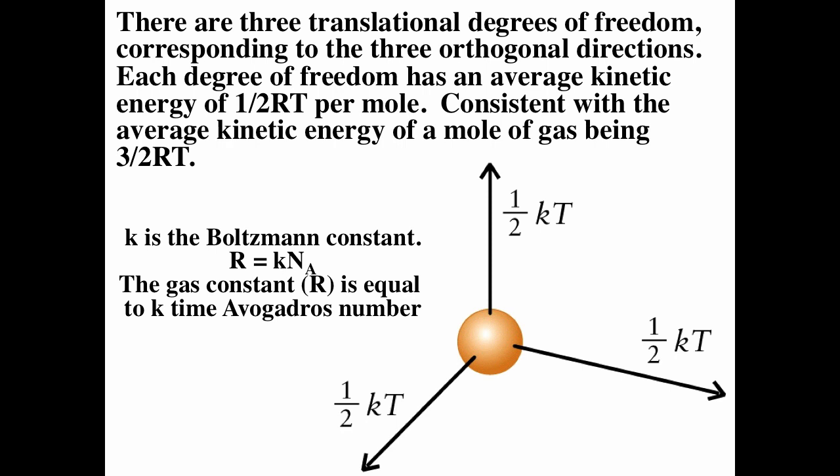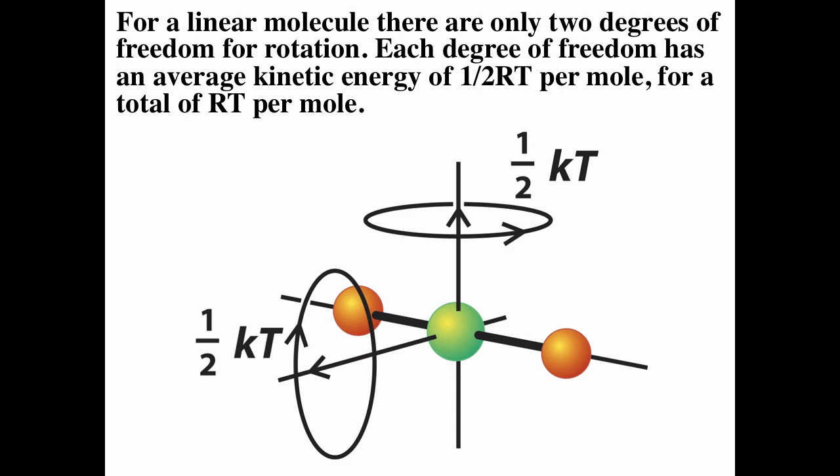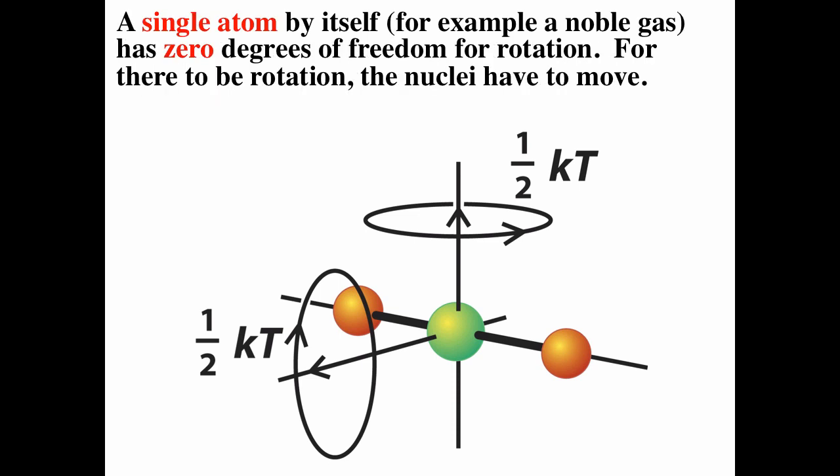There are three translational degrees of freedom because we live in three-dimensional space. All gases have three translational degrees of freedom. For nonlinear molecules, there are three rotational degrees of freedom because you can rotate about three different axes. For linear molecules, there are only two rotational degrees of freedom, because rotating about the bond axis doesn't move the nuclei, so it doesn't count. A single atom — for example, a noble gas — has zero rotational degrees of freedom.